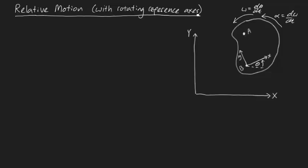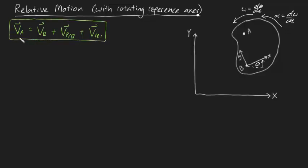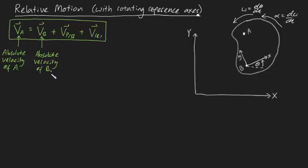From this alone we can find expressions for the absolute velocity and absolute acceleration of point A. The absolute velocity of A equals the absolute velocity of point B, plus the velocity of P relative to B, plus another term called v_rel. v_A is the absolute velocity of A relative to these fixed axes. v_B is the absolute velocity of point B — graphically, at this particular instant, it could look like this, depending on how the plate is moving.